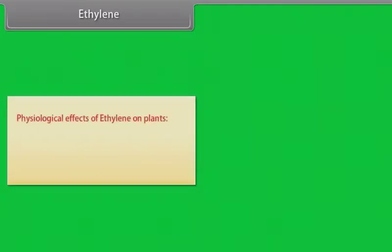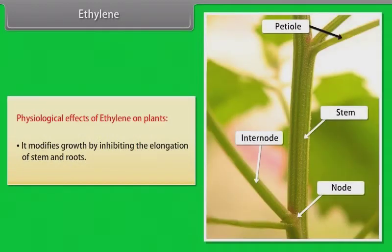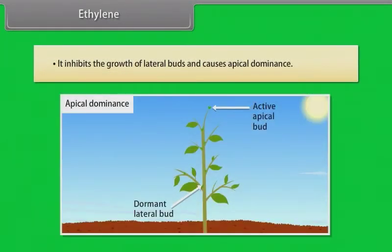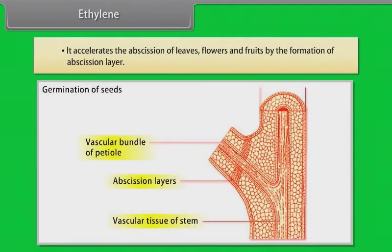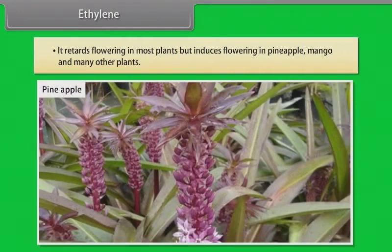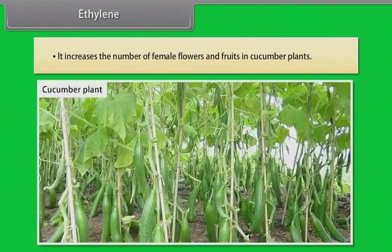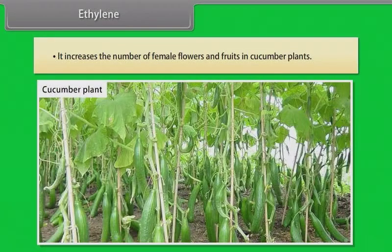Ethylene. Physiological effects of ethylene on plants: it modifies growth by inhibiting the elongation of stem and roots. It inhibits the growth of lateral buds and causes apical dominance. It accelerates the abscission of leaves, flowers and fruits by formation of abscission layer. It retards flowering in most plants but induces flowering in pineapple, mango and many other plants. It increases the number of female flowers and fruits in cucumber plants.